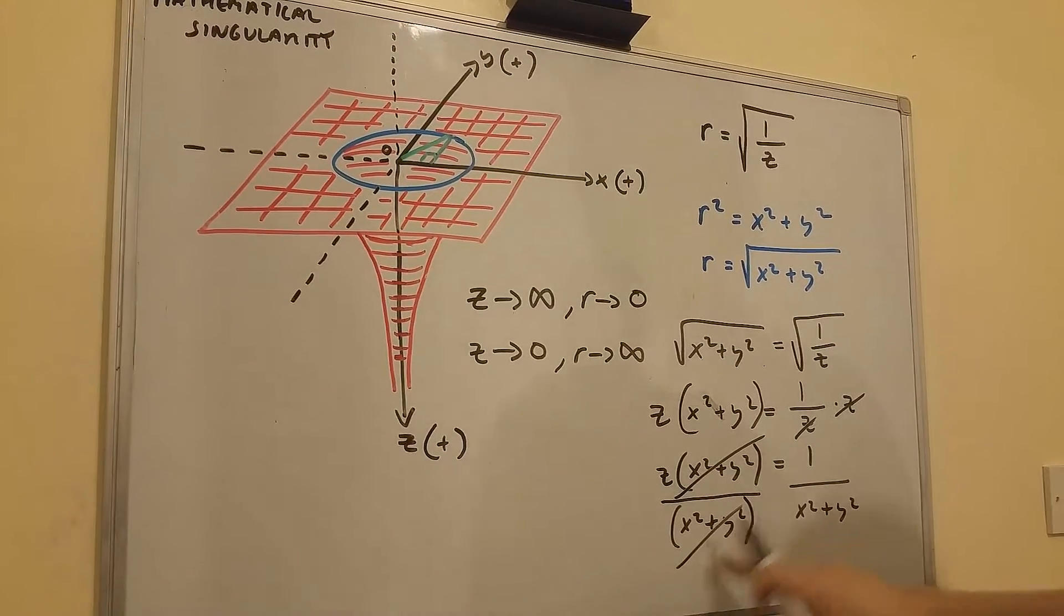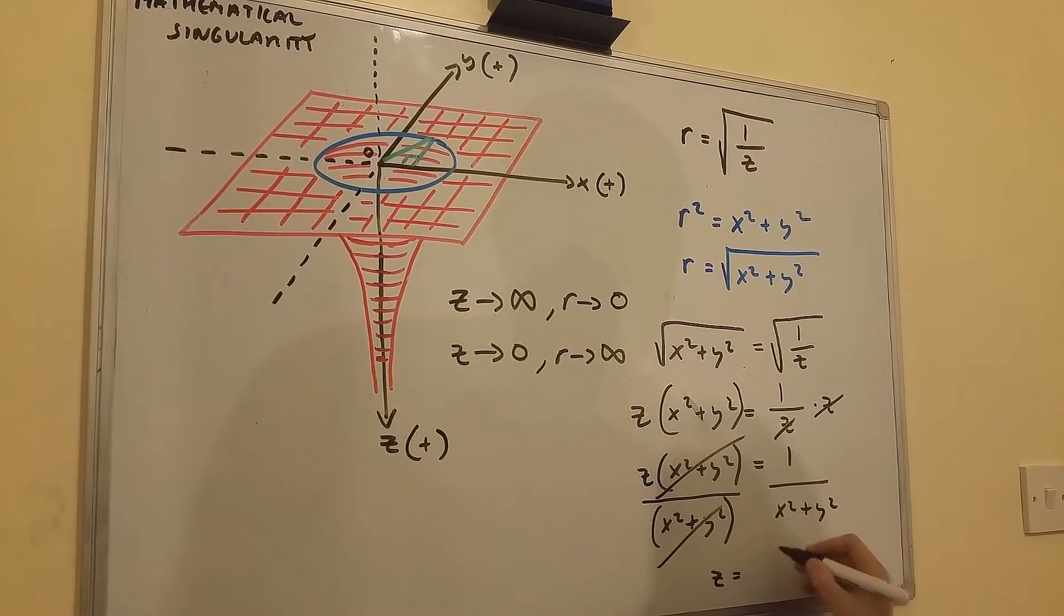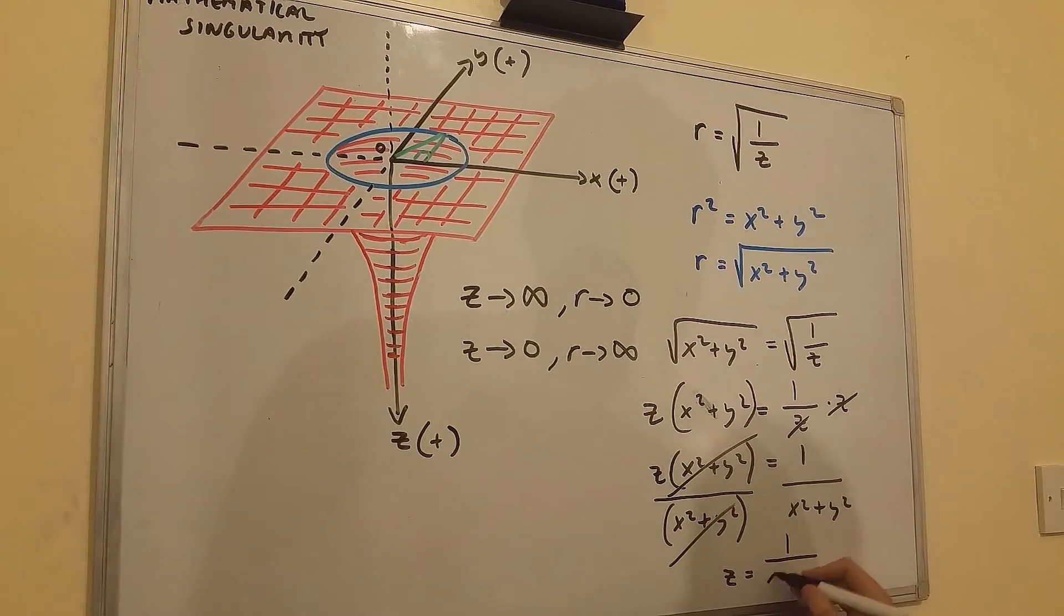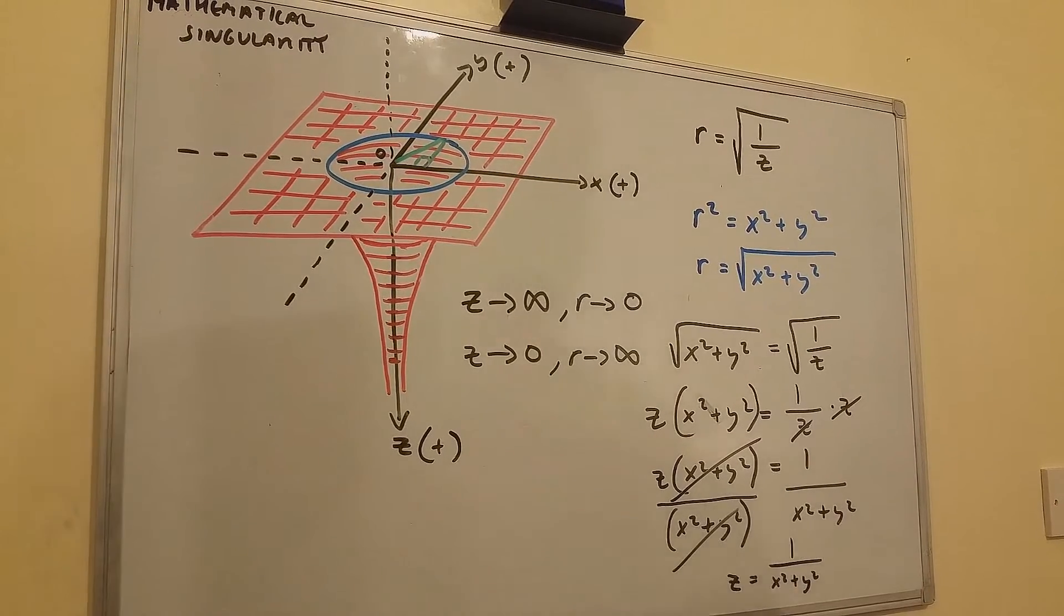And if I do this, I'm going to be left with z equals 1 over x squared plus y squared.